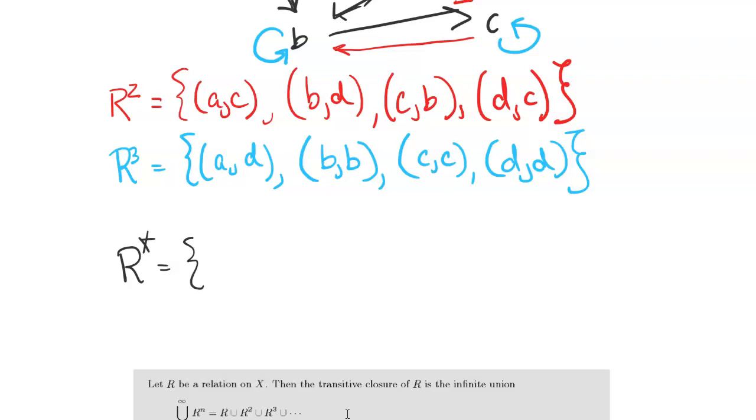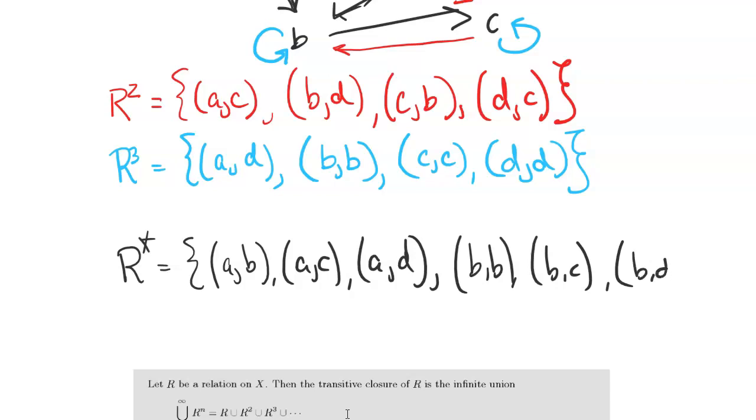Which is equal to all of the pairs that we just found. So we've got AB, AC, and AD. We've got BB, BC, BD, CB, CC, CD, and DB, DC, DD.